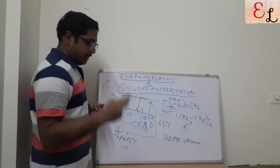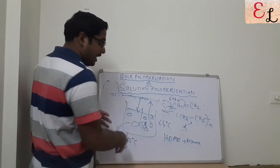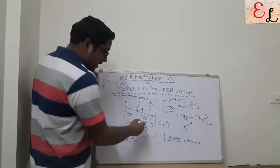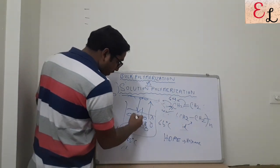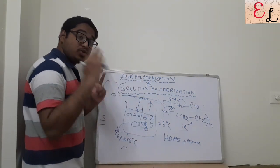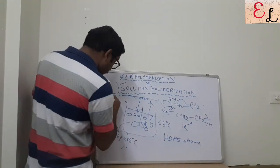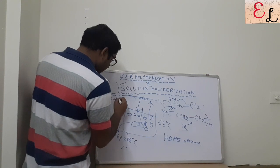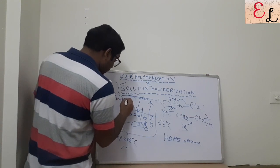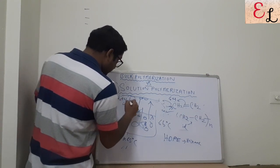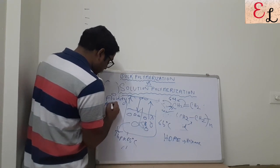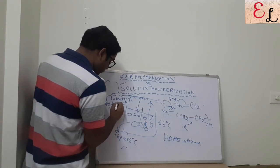Coming to the second point — agitation. Agitation is also not a problem in solution polymerization. As we can clearly understand, the monomers are forming polymers within the solution itself, so the fluidity is higher compared to bulk polymerization, and hence the agitation is not a problem.